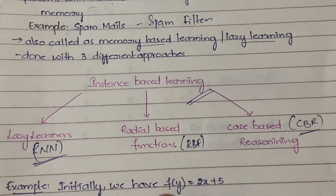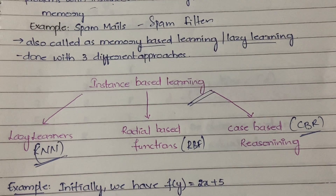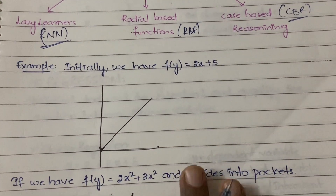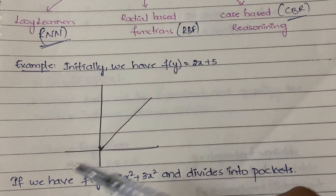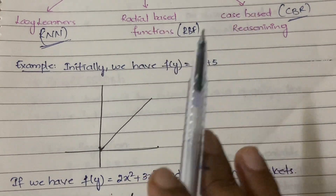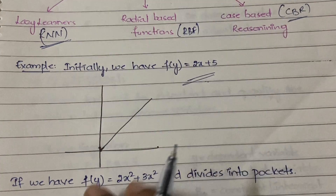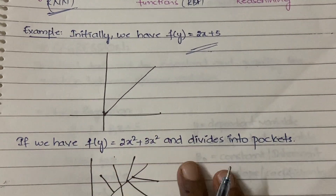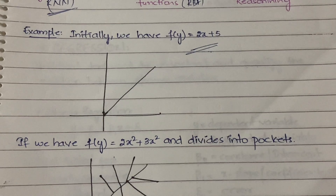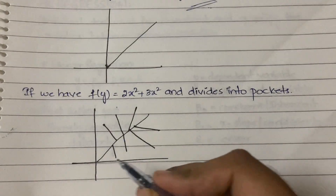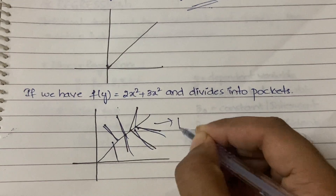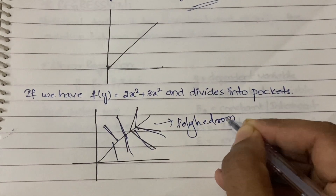Let's consider an example. Initially we have a function f(x) = 2x + 5. When you draw a graph for this function, you get a straight line starting from the origin. Now suppose the function changes to f(y) = 2x² + 3x². This new function won't have the same linear graph. So what we do is divide the function into a number of pockets or segments, where each segment is called a polyhedron.